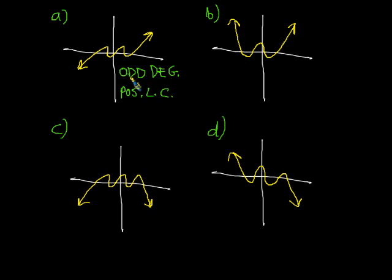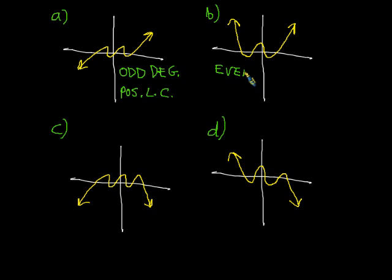Don't get these mixed up — we're not talking about odd leading coefficients or positive degrees. Make sure you have this nailed down; this might be a good thing to put on flashcards to practice with. The next one here looks a little bit like a quadratic, like a parabola, at least on the ends. Because it looks like an upward-facing parabola — a smiley face — and parabolas are based on y equals x squared which is an even degree polynomial, this must be an even degree polynomial with a positive leading coefficient.